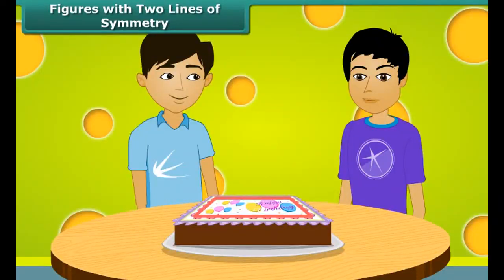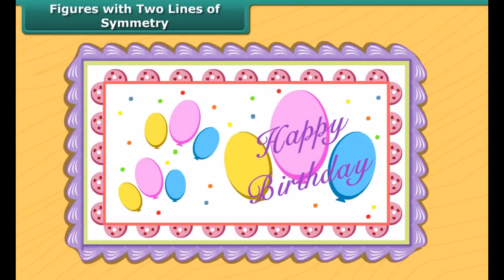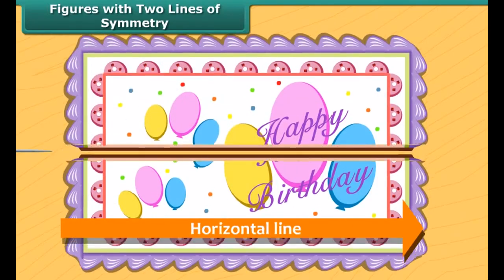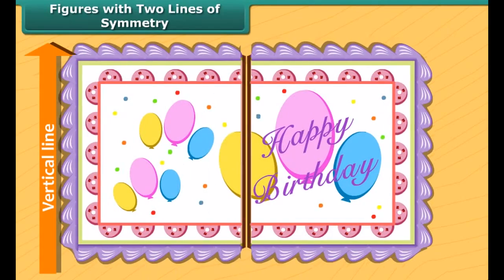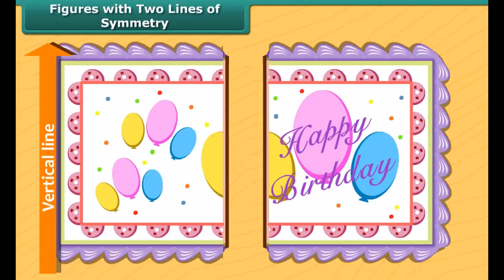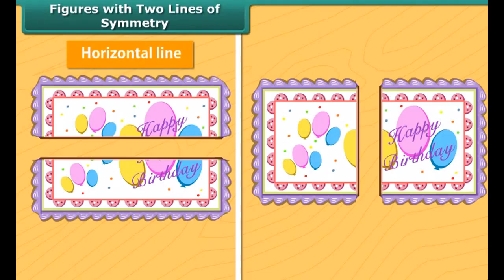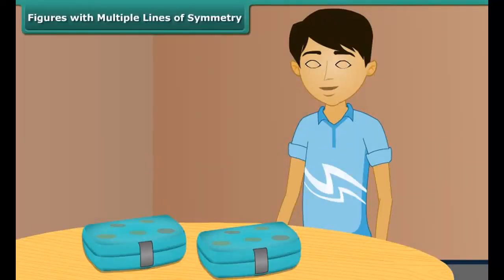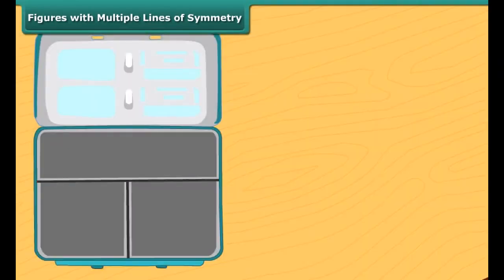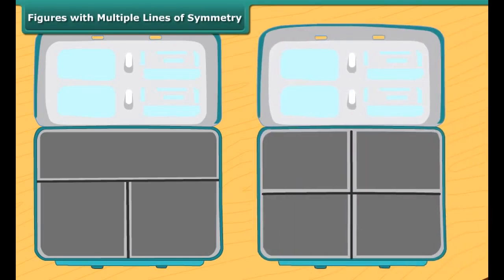Manu and Mrinal have one rectangular cake. Each of them want exact half of it. The cake can be divided in two ways to give equal halves. The cake can be divided along the horizontal line so that its two halves match each other. It can also be divided along the vertical line. So the cake has two lines of symmetry along which it can be divided to give two identical halves. Thus, a rectangle has two lines of symmetry.